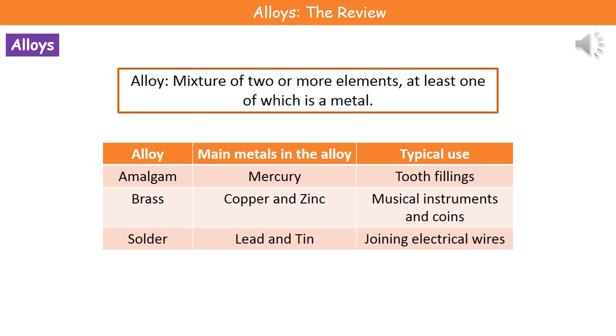The next alloy is brass, which is made of copper and zinc. That one we use in musical instruments and coins.